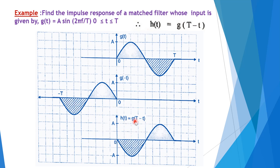The delayed version gives H(T) = G(T − T). So the impulse response is given by the delayed version of the folded input signal: H(T) = G(T − T). It is very simple to find the impulse response of a match filter, and easy to find the error probability and draw the waveforms for the impulse response as well as the output.